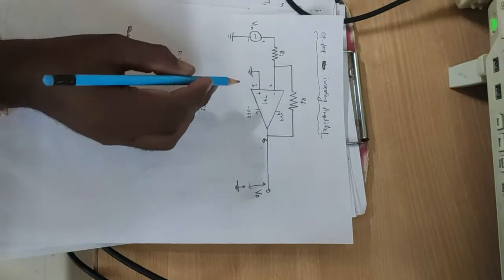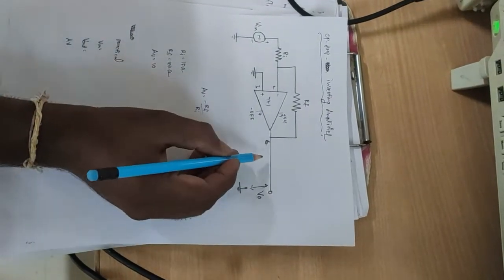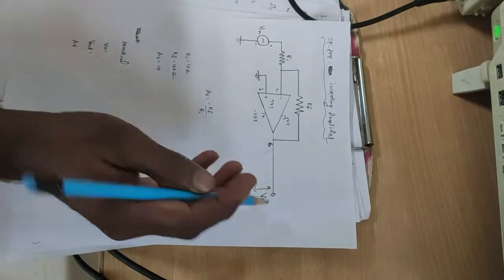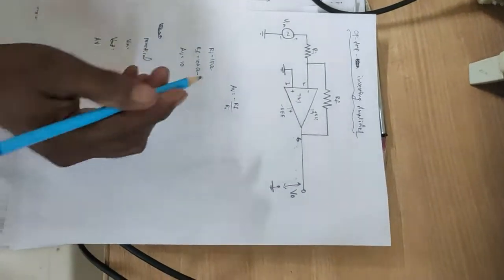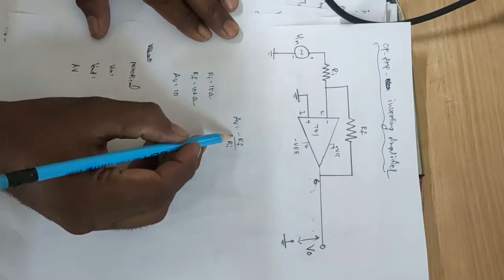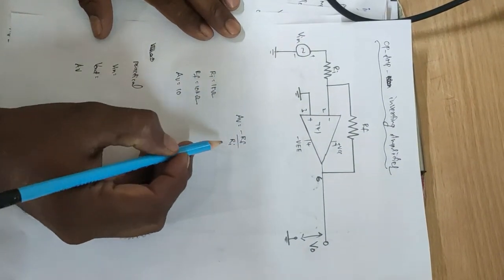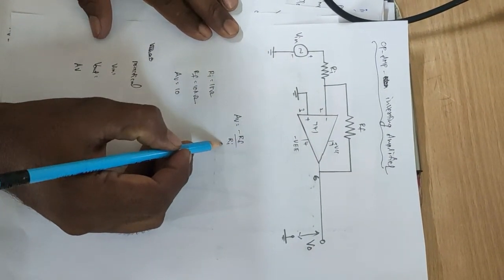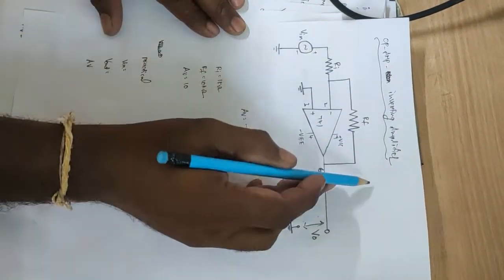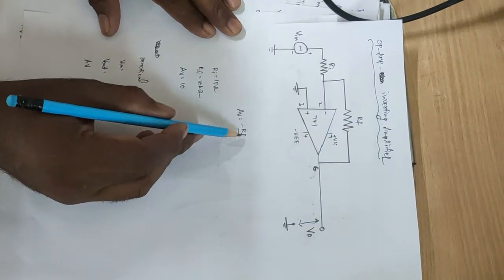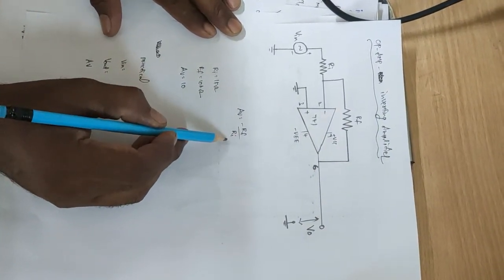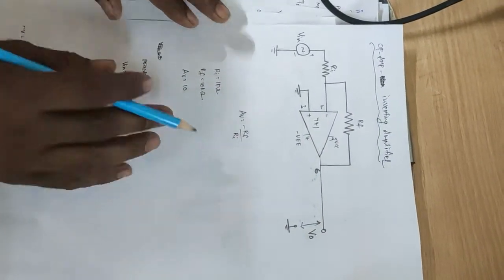The output is observed across Pin 6. The Voltage Gain is equal to minus Rf by Ri. This is the Inverting Amplifier, where Rf is the Feedback Resistance and Ri is the Input Resistance.